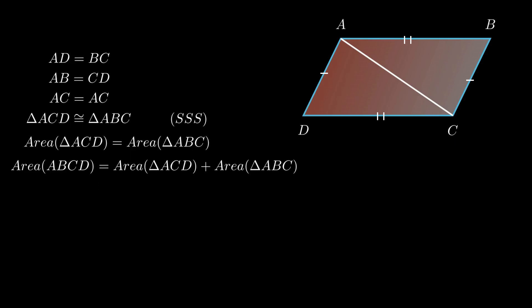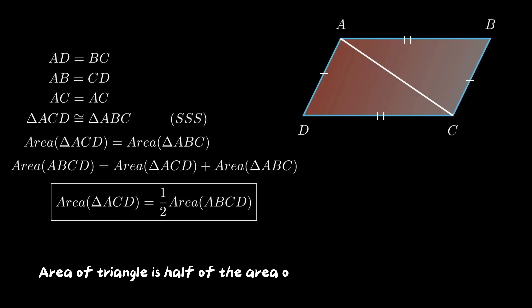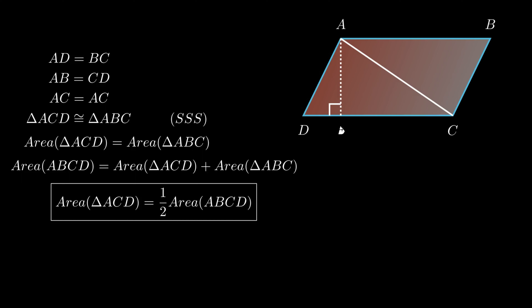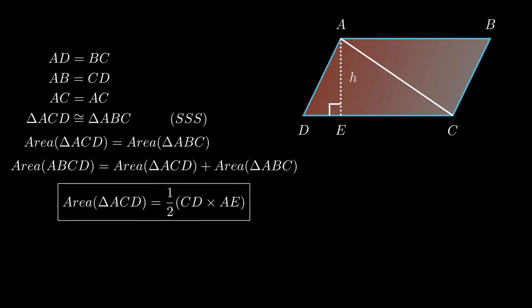From the figure, the area of parallelogram ABCD is the sum of the areas of triangle ACD and triangle ABC. Therefore, the area of triangle ACD equals half the area of parallelogram ABCD — an important result showing it is half the area of the parallelogram formed on the same base and between the same parallel lines. Since the area of a parallelogram equals base times height, construct AE perpendicular to CD. Then area of triangle ACD equals half times CD times AE, which, since CD equals AB, gives half times AB times AE — the area of triangle ABC. Hence, the two triangles are equal in area.